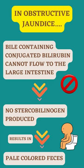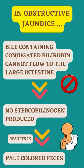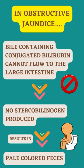However, in obstructive jaundice, there is an obstruction which prevents the flow of bile — which contains conjugated bilirubin — to the large intestine. As a result, there is no stercobilinogen and eventually no brown color feces.